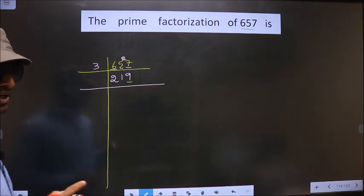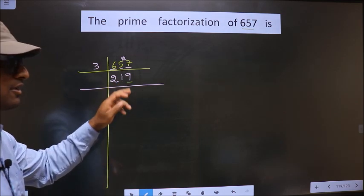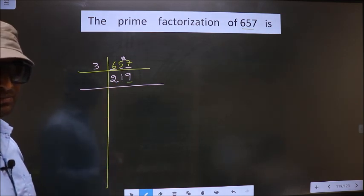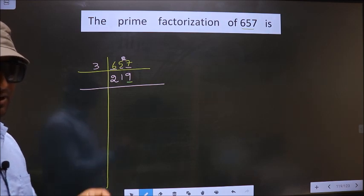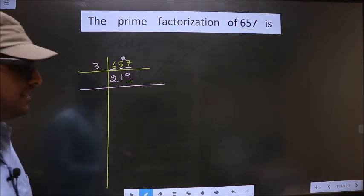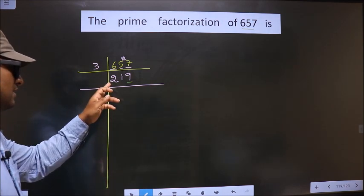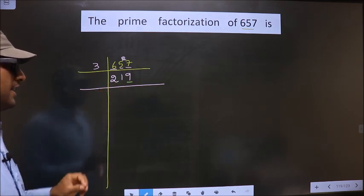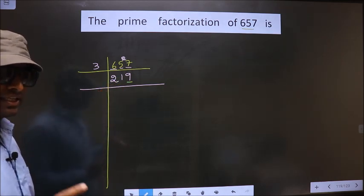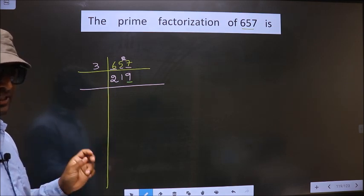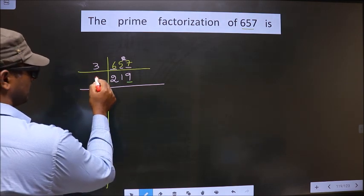219, which is not even. So this is not divisible by 2. To check divisibility by 3, we should add the digits. That is 2 plus 1 plus 9 is 12. Is 12 divisible by 3? Yes. So this number is also divisible by 3.